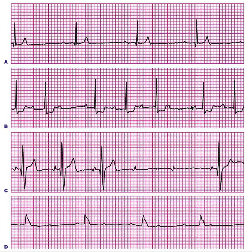This is due to AV block at the AV node. The block is happening at the AV node — that's why there is this progressive prolongation of the PR interval. In Type 2 — second degree Mobitz Type 2 — some but not all P waves are blocked.